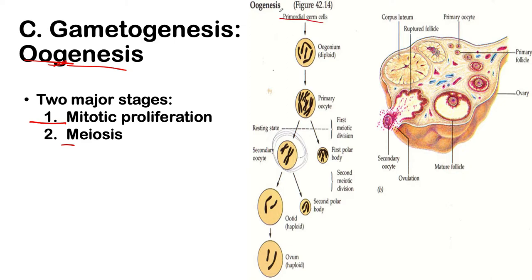We start with primordial germ cells in your ovary. These undergo mitosis to produce what we call your oogonium. The oogonium then undergoes meiosis. When it undergoes meiosis 1, it produces what is called the primary oocyte. This primary oocyte then undergoes the first stage of meiosis, producing the secondary oocyte and the first polar body.